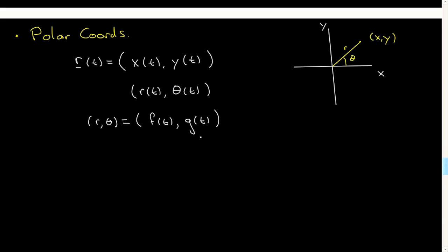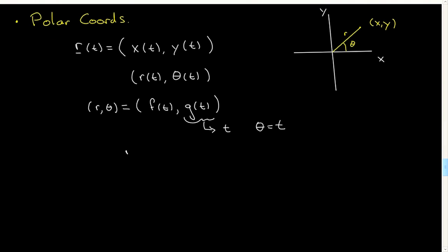In practice, very often the case in this subject, this function of t is just t itself. That is to say, theta and t are the same, which is to say that the parameterized curves are always in the form, the radial coordinate is some function of the angular coordinate.